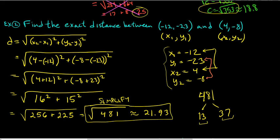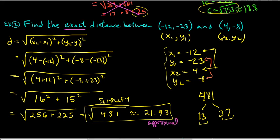Before moving on: notice the directions say 'find the exact distance.' The exact distance is the square root of 481. The 21.93 is approximate — they didn't ask for that. It doesn't hurt to do both, but in this problem all they wanted was the exact answer, which is the square root of 481.